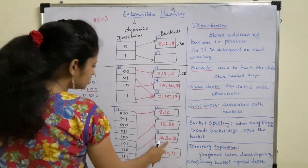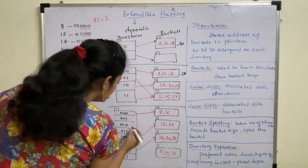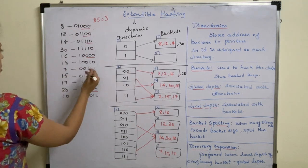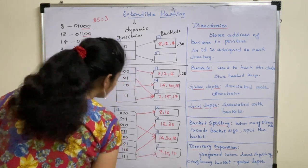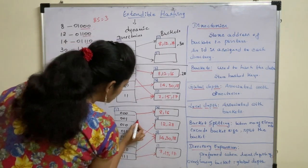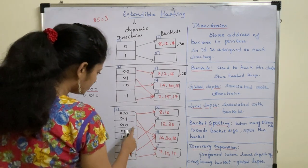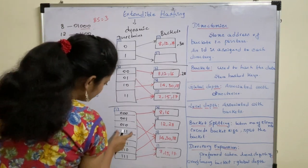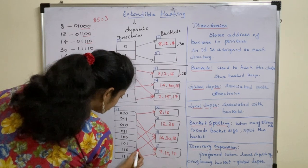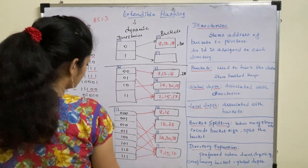13 also has last 3 bits 110. 18 has last 3 bits 010, so mark 18 to the directory with ID 010. 7 means triple 1 — last 3 bits are 111. 15 is also triple 1. 17 means last 3 bits are 001. The remaining entries with IDs 011 and 101 are mapped to the last bucket. This completes the rehashing.